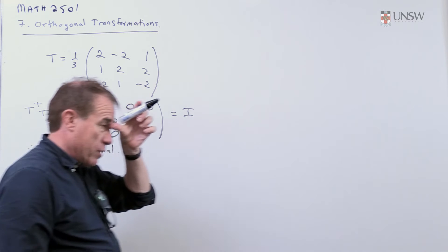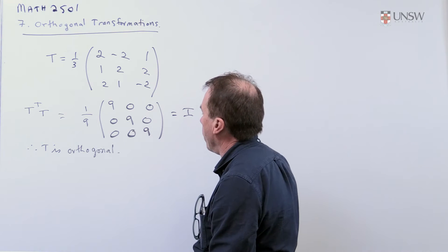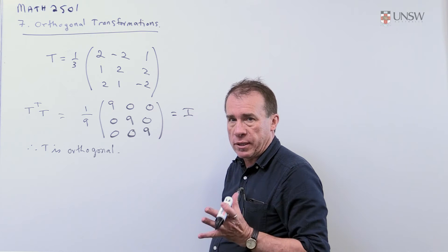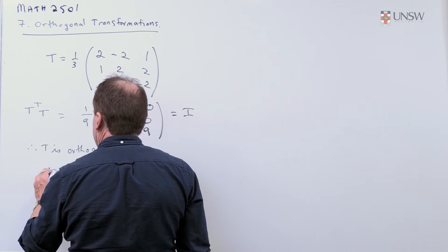Now every non-zero orthogonal matrix has a determinant of plus or minus 1. So I need to check which way round it is here, whether it's plus 1 or minus 1. So here I need to get the determinant of T.